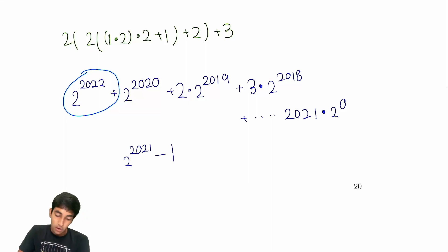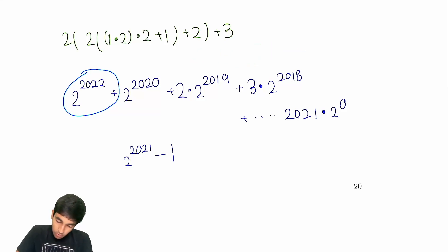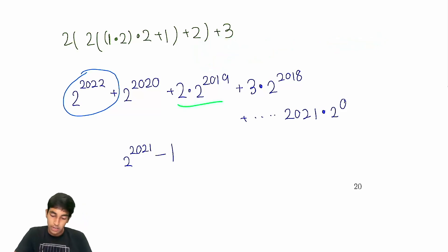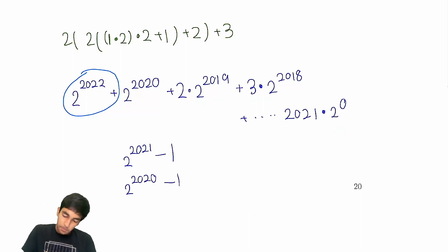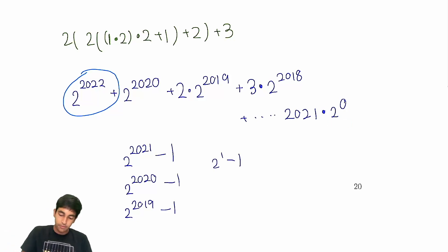Now look at what's left. We added 2 to the 2020, 2 to the 2019, all the way to 2 to the 0. We still have 2 to the 2019 plus 2 times 2 to the 2018, all the way until 2020 times 2 to the 0 remaining. So we do something similar — starting at 2 to the 2019, we add 2 to the 2019 plus 2 to the 2018, all the way to 2 to the 0, which gives 2 to the 2020 minus 1. Continuing, 2 to the 2018 down to 2 to the 0 gives 2 to the 2019 minus 1, and this pattern continues until we just have 2 to the 0 left, giving 2 to the 1 minus 1.